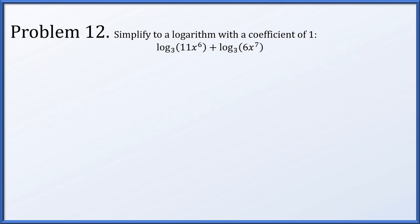Problem 12: simplify to a single logarithm with a coefficient of 1. We have log base 3 of 11x to the sixth plus log base 3 of 6x to the seventh. The sum of two logarithms with the same base is the logarithm of the product: 11x to the sixth times 6x to the seventh. Since 6 times 11 is 66 and x to the sixth times x to the seventh is x to the 13th, we get log base 3 of 66x to the 13th.